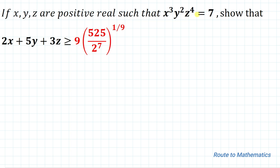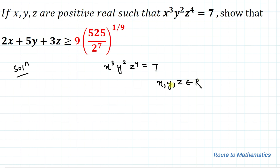We are given that x³y²z⁴ equals 7, and from that we are asked to prove this inequality. We need to prove the minimum value of 2x + 5y + 3z is greater than or equal to 9 multiplied with (525 / 2⁷)^(1/9).